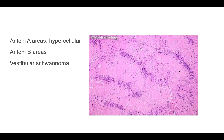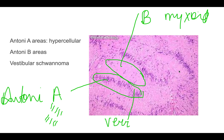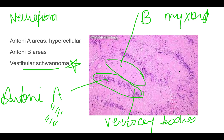In the histopathological picture you can see a light, very eosinophilic pink area — Antony A area, which is the hypercellular area — and Antony B area, which is the hypocellular or myxoid area. The palisading arrangement of nuclei in the Antony A areas forms the Verocay bodies. This is seen in schwannoma. A very important schwannoma to know is vestibular schwannoma, which causes deafness, also known as acoustic neuroma.